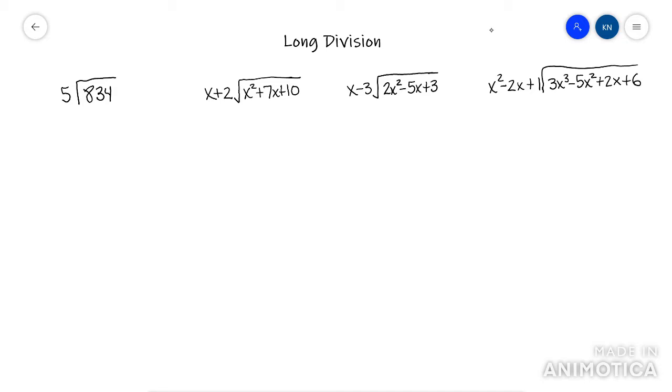Basically to do long division, you're going to divide the first term by the 5. So 8 divided by 5 is 1, it goes in one time. You then take this number here and multiply times the 5. 1 times 5 is 5 and you write it below the 8 and you subtract.